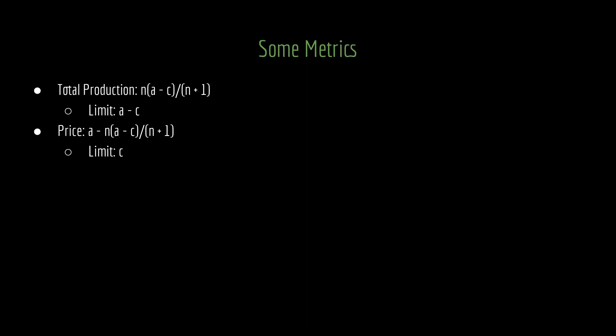To finish up here, I want to talk about a couple of metrics. First is the total quantity of production. We have n firms each producing (a minus c) divided by (n plus one). So that means that the total quantity of production is going to just simply be n times (a minus c) all divided by (n plus one). If you think about what the limit of this is, as n approaches infinity, that total quantity of production is going to go to (a minus c).